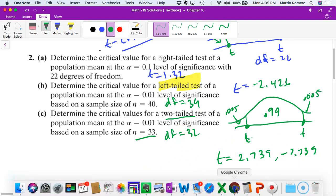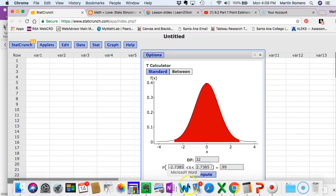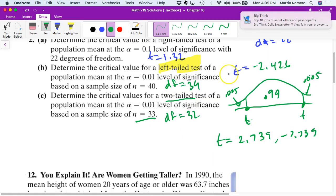So my critical T's in this case are going to be 2.739 and negative 2.739. If we round that up, that 5 may be the 8 or 9. So that's what we have. That's problem number 2. So those are critical values.